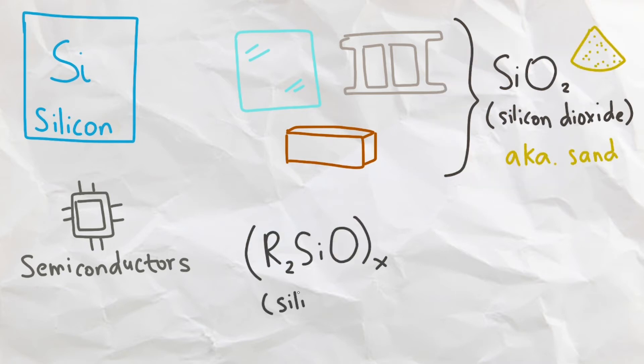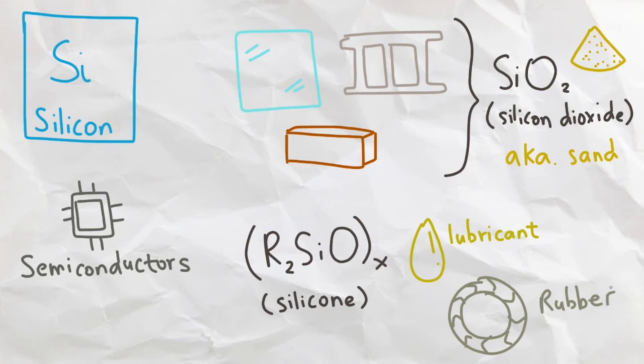Silicon is also important for silicone, which can be made into silicone oil as a lubricant, or into silicone rubber as a waterproof material.